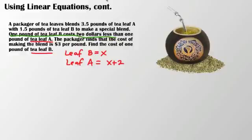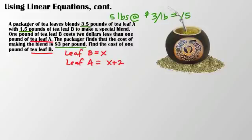Now, there's some other information in here. The packager finds that the cost of making the blend is $3 per pound, but we also know how many total pounds are being made, because we have 3.5 pounds of tea leaf A and 1.5 pounds of tea leaf B. So, total, that's 5 pounds. That's 5 pounds at $3 a pound. Which then tells us, since we're looking for cost, the total cost is going to be $15. So, now I have enough to set up my equation.